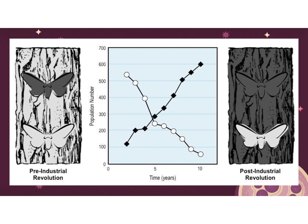Then the Industrial Revolution happened. There was a lot of coal and ash produced, which covered the trees and changed them to black. Over time, the black moth became better able to survive — its allele frequency went up and the white went down. The reverse actually happened again because we reduced pollution, and now the population has stabilized.